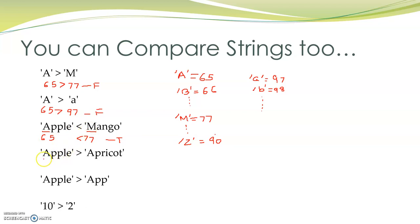Now let's look at another example where both words start with A. The comparison goes character by character. Capital A equals capital A, then P equals P, then small P equals small P — they are same. So we go to the third character where we have small P and small R. Since P comes before R alphabetically, encoding of P will be lesser than encoding of R. We are comparing for greater than, so this expression evaluates to false.